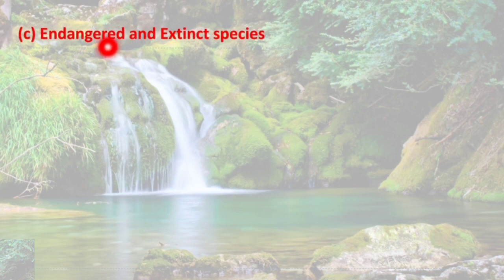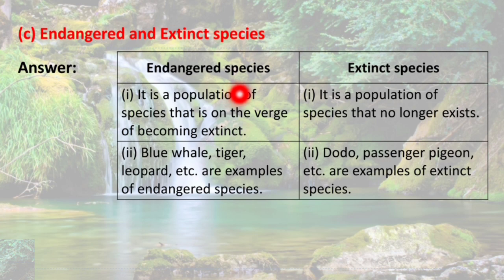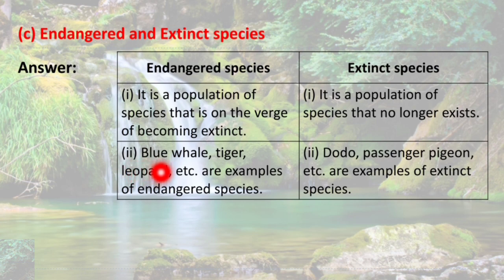Next: endangered and extinct species. Endangered species is a population of species that is on the verge of becoming extinct, while extinct species is a population that no longer exists. Endangered species are almost extinct — their population has been reduced quite a bit. Blue whale, tiger, and leopard are examples of endangered species, while dodo and passenger pigeon are examples of extinct species.